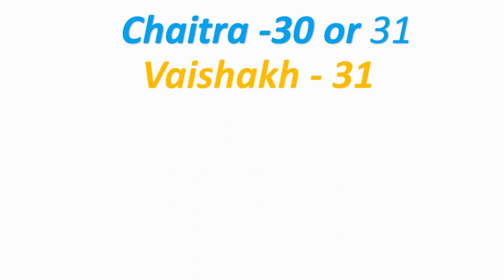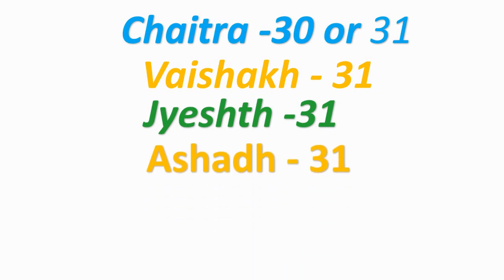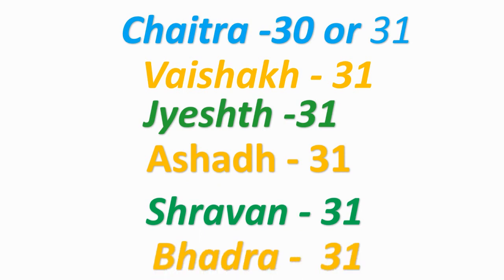Children, let's learn how many days are in each month. In Chaitra, there are 30 or 31 days. In Vaishak, there are 31 days. In Jyeshtha, there are 31 days. In Ashad, there are 31 days. In Shravan, there are 31 days. In Bhadra, there are 31 days.